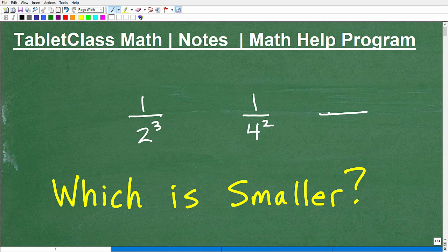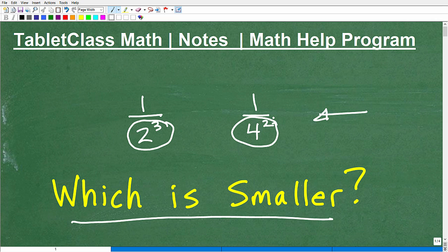Okay, so we have two fractions here, and the question is, which one is smaller? So we have 1 over 2 cubed, and we have 1 over 4 squared. So not only are these fractions, but we have these interesting denominators that have powers in them.